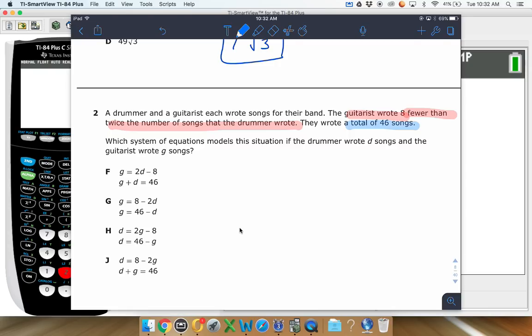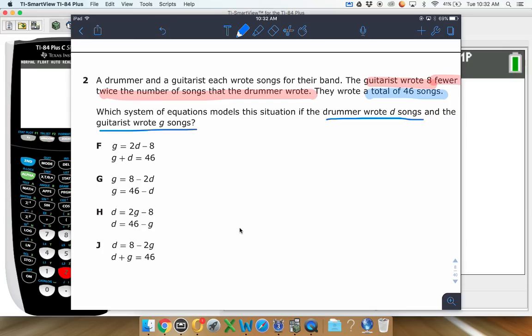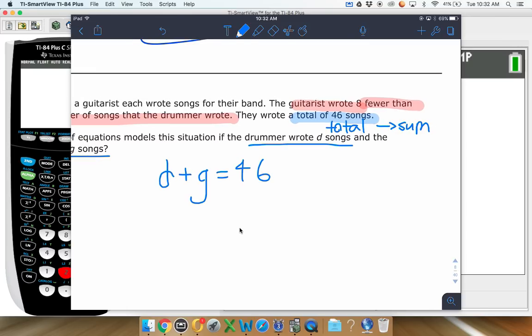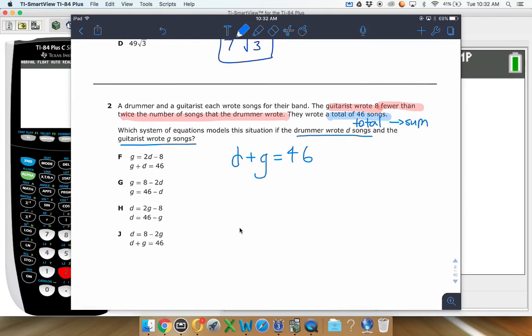The total of 46 songs. You have two different variables. They say D is the songs that the drummer wrote, and then G is the songs that the guitarist wrote. So together, when you add those two things up, D plus G, together they wrote 46 songs. This right here, the 46, that's a total. And usually when I see a total, that means you're going to be adding a bunch of things. So it's going to be some type of sum. So D plus G, that's adding two things. That equals 46.